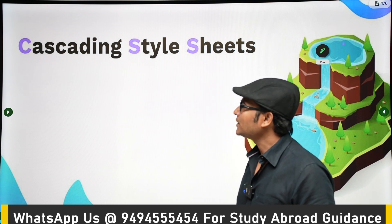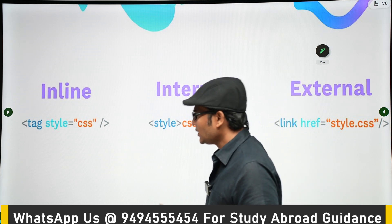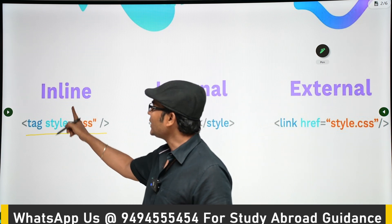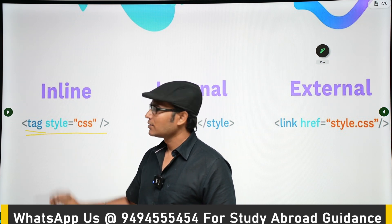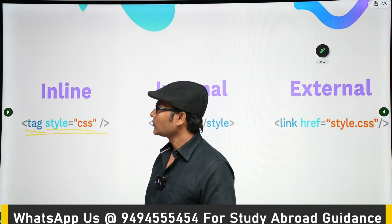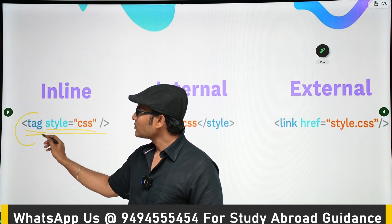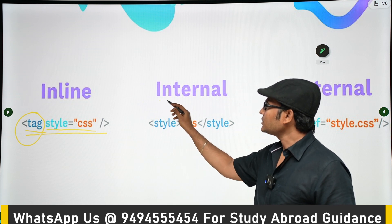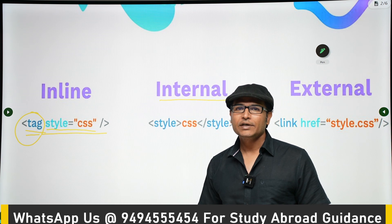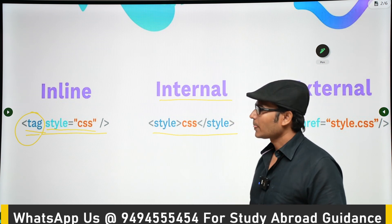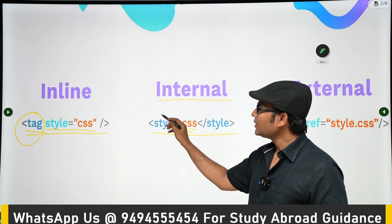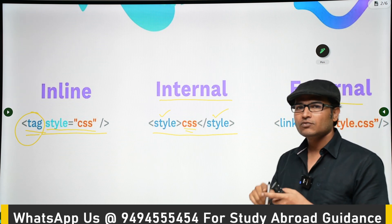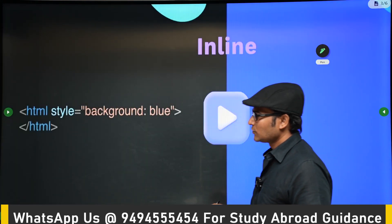Now let's see how to apply CSS styling into a website. One way is called inline — in the same line of the HTML tag we write the style. Another way is internal styling, where instead of writing it in the same line we write it in the head part of the HTML within the style tag. And then external means we have a separate external CSS file and we link to it.